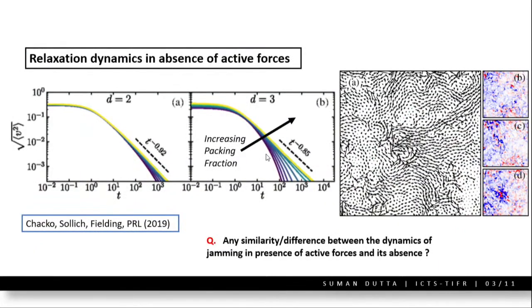In 2019, Peter and colleagues studied passive jamming dynamics — starting from a liquid-like state and reaching a jammed state in the absence of active forces. Our question is: can these jamming states be achieved in the presence of activity? Shantan also referred to shear-jammed states. We distinguish passively jammed states from actively jammed states and ask whether they have distinct features.